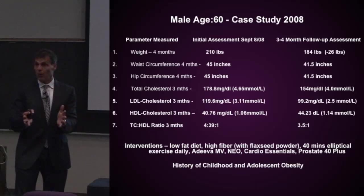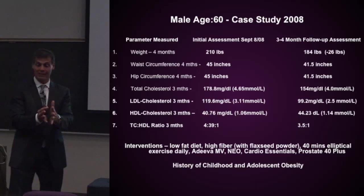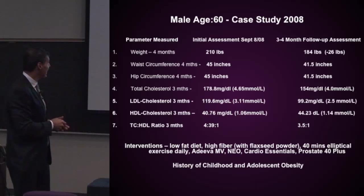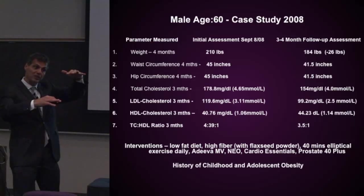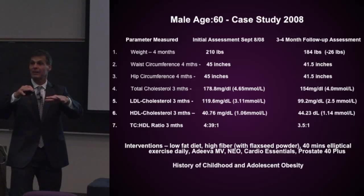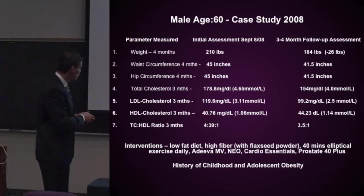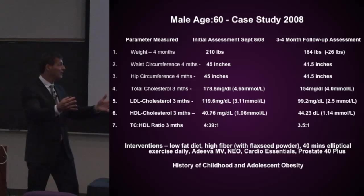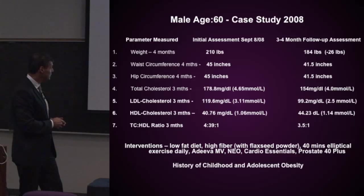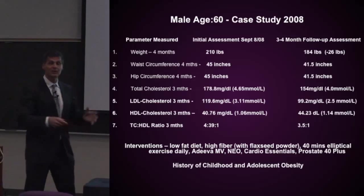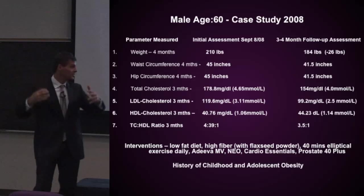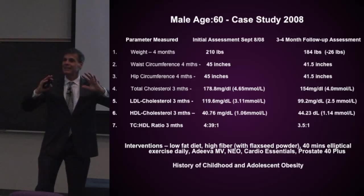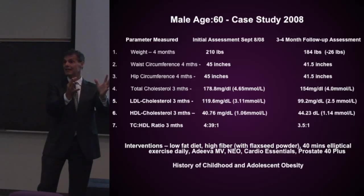The LDL goes from 3.11, which I don't want, down to 2.5, which is actually acceptable — I would like it to go lower, but this is only in the first three months. His HDL goes up from 1.06, which for a man is not good, up closer to what is considered ideal. His total cholesterol-to-HDL ratio goes from a high ratio down to what you want — a three-to-one ratio or less. So within three months, he's almost at the ideal ratio. No drugs. He wasn't on a diet — I simply took the fats out, gave him more fiber and some ground flaxseed. He used his elliptical machine at home, starting at 20 minutes a day and working up to 40 minutes five times a week while watching television.